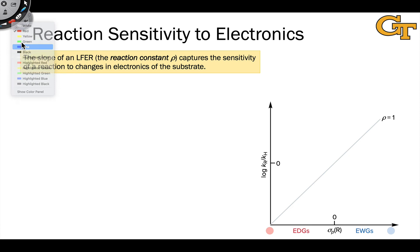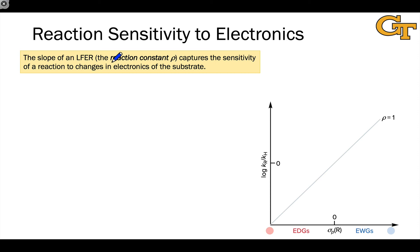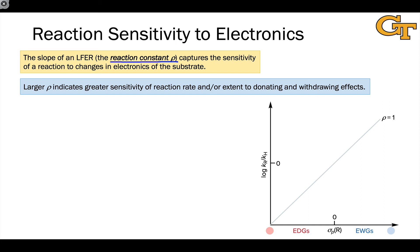So the sign of the slope gives us insight into whether the substrate acts as an electrophile or nucleophile in the rate-determining step. But the magnitude of the slope also gives us information; this is called the reaction constant rho, since it is characteristic of the reaction itself. The magnitude of rho captures the sensitivity of that reaction to changes in the electron-donating or withdrawing nature of the substituent, with larger rho indicating greater sensitivity.